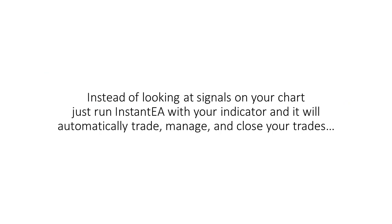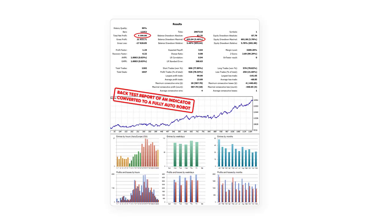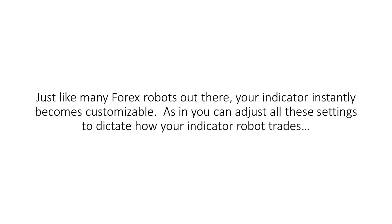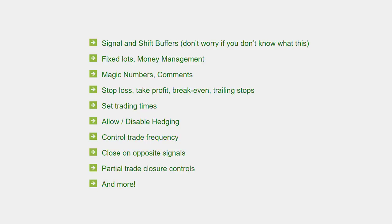Instead of looking at signals on your chart, just run Instant EA with your indicator and it will automatically trade, manage, and close your trades. Your indicator instantly becomes customizable — you can adjust all these settings to dictate how your indicator robot trades: signal and shift buffers, fixed lots and money management, magic numbers, comments, stop loss, take profit, break even and trailing stops, set trading times, allow or disable hedging, control trade frequency, close on opposite signals, and partial trade closure controls.